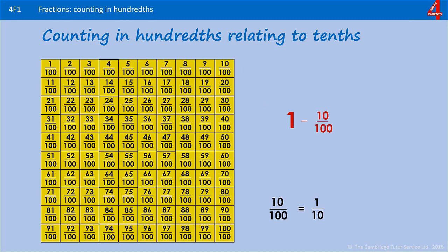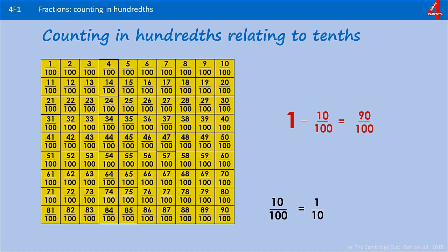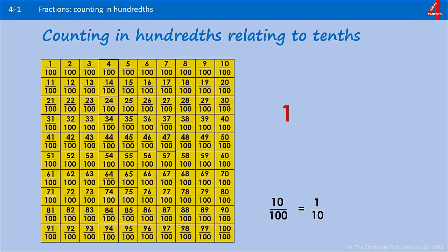If we have the whole thing and we take away ten hundredths, we're taking away a whole row, and that leaves us with 90 hundredths. Those hundredths can be expressed as tenths. What we've done is take away a row of ten hundredths, which is one tenth of the whole thing. What we have left in tenths: one, two, three, four, five, six, seven, eight — nine rows of ten hundredths, which is the same as nine tenths.